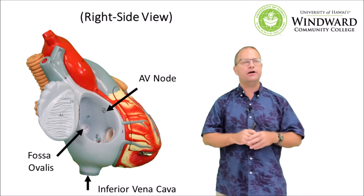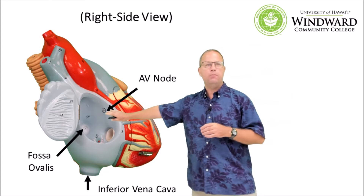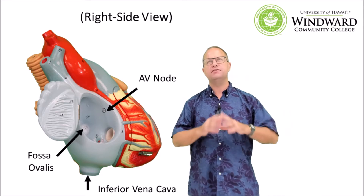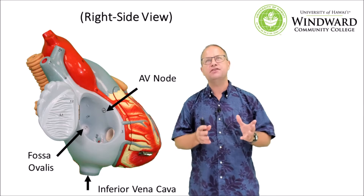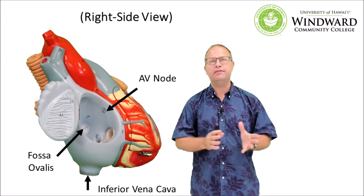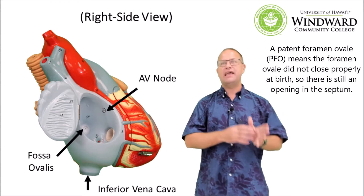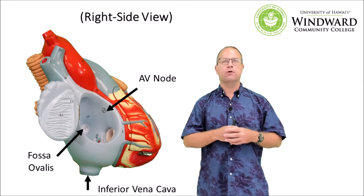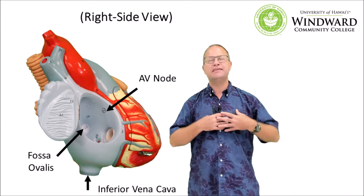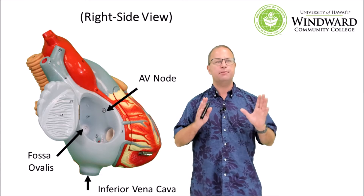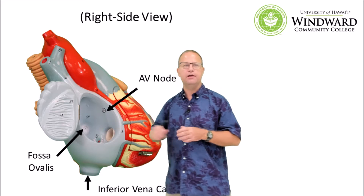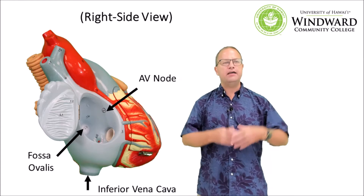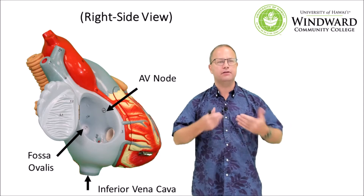Let's take a look at the right hand side of the heart. With the right atrium opened up, we can see the fossa ovalis — a depression that actually used to be a foramen called the foramen ovale. The foramen ovale was a fetal shunt between the left and right atria that allowed bypass of the pulmonary circuit, since there was no reason to send blood to the lungs during fetal life. It closes soon after birth and becomes the fossa ovalis. We can also see the inferior vena cava, which brings back oxygen-poor blood from the lower half of the body.